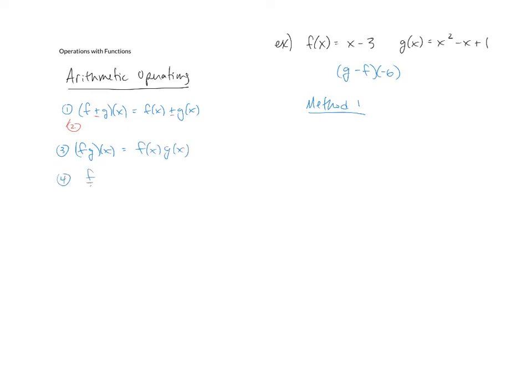And the fourth one division would be probably what you expect to see: f of x divided by g of x. There is an additional condition here though we do have to remember. The g of x in this case cannot be zero because we can't divide by zero. So those are the arithmetic operations.